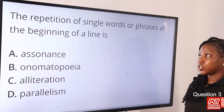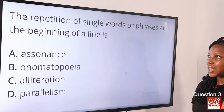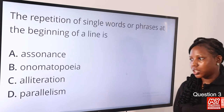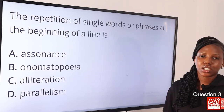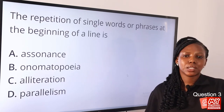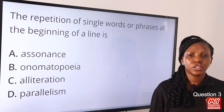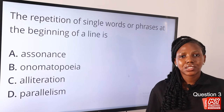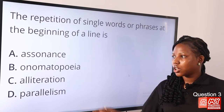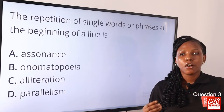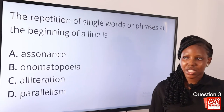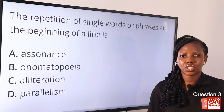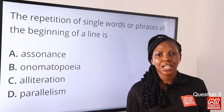Question 3. The repetition of single words or phrases at the beginning of a line is dash. The answer to this question is option D, parallelism. In literature, parallelism is the repetition of words or phrases within a sentence. Assonance is the repetition of vowel sounds. Onomatopoeia is the formation of words from the sound associated with it. And alliteration is the repetition of consonant sounds. So the answer to this question is option D, parallelism.